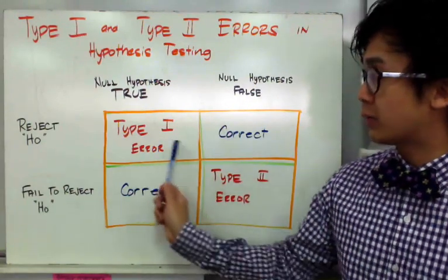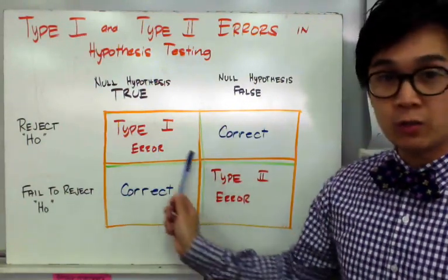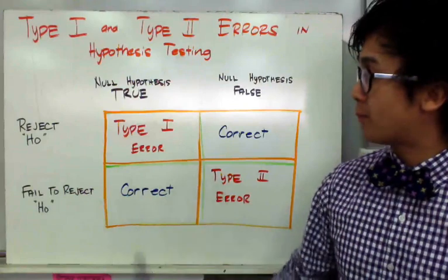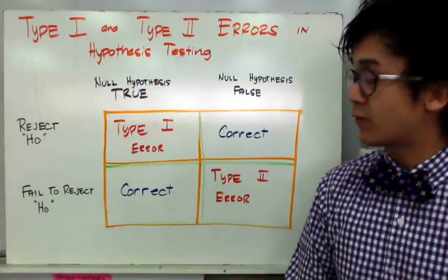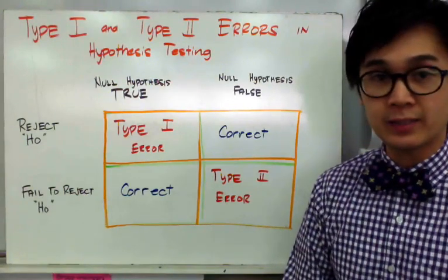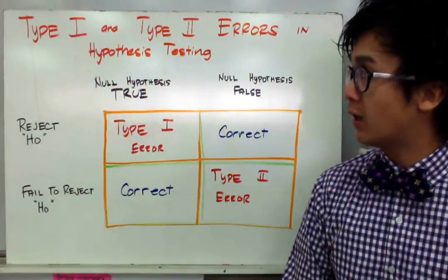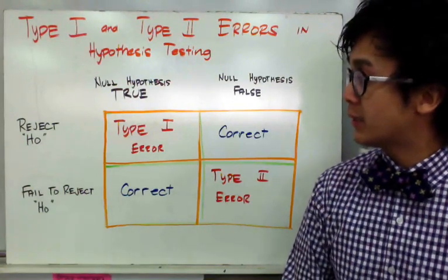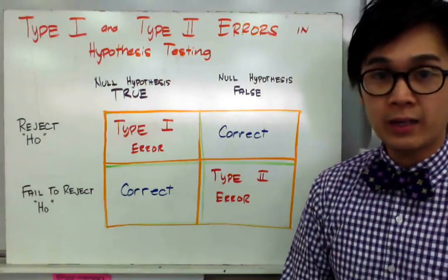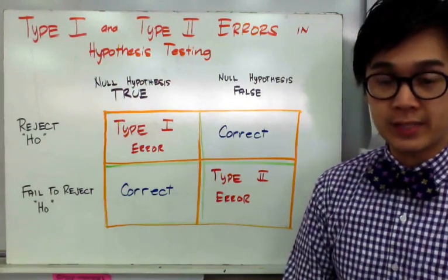Those are the types of errors we're going to show in hypothesis testing for today's lesson, and I'm going to give you an example of these errors in a hypothesis testing context.